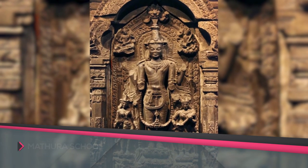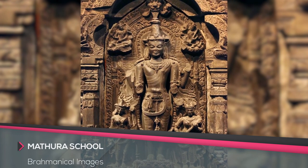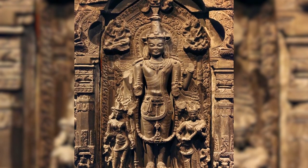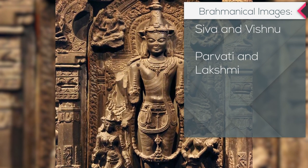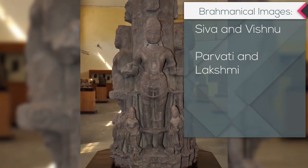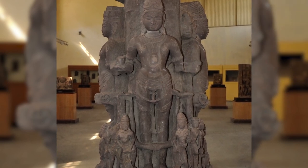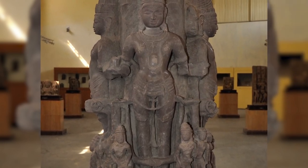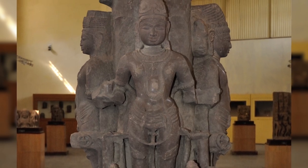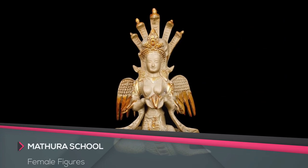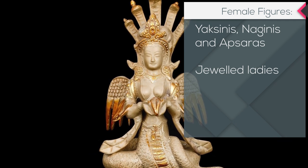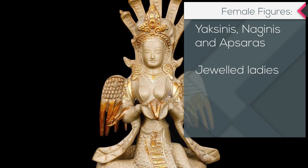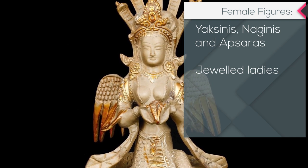The Mathura artists also carved out images of Brahmanical divinities. Popular Brahmanical gods like Shiva and Vishnu were represented alone, and sometimes with their consorts Parvati and Lakshmi respectively. Images of many other Brahmanical deities were also faithfully executed in stone. The most striking remains are the beautiful female figures of Yakshanis, Naginis and Apsaras. These richly jewelled ladies stand in set attitudes reminiscent of the Indus dancing girl.